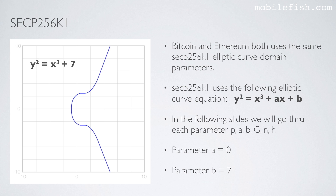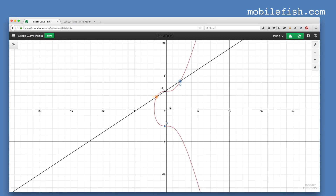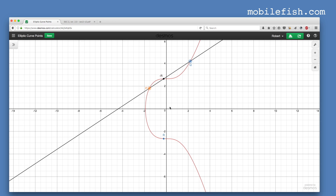Parameter A has the value 0 and parameter B has the value 7. Thus the equation will be Y squared equals X cubed plus 7. This is how the elliptic curve looks.